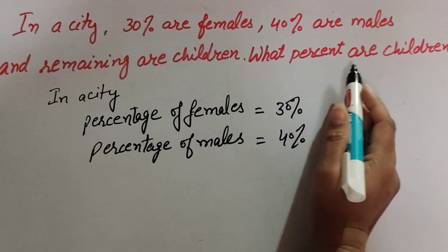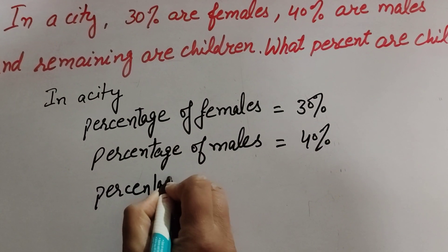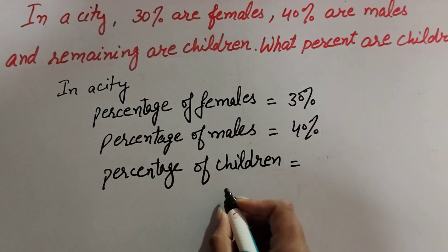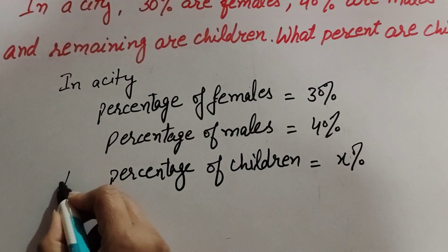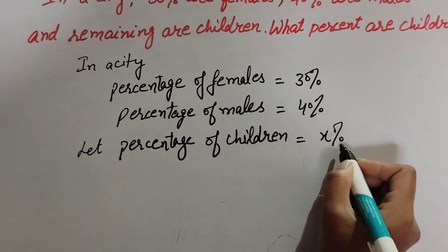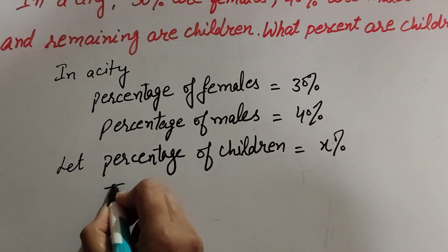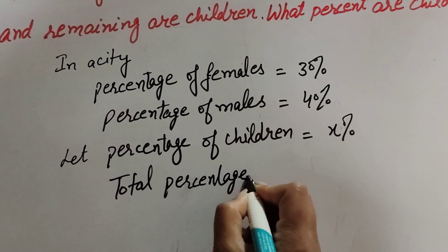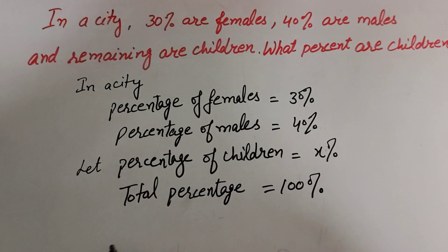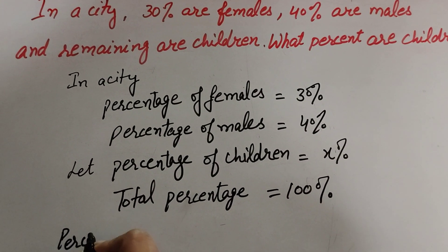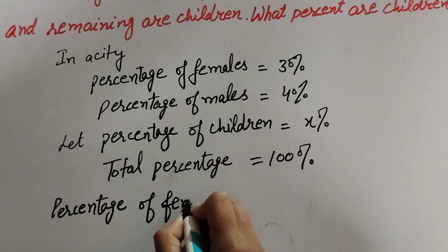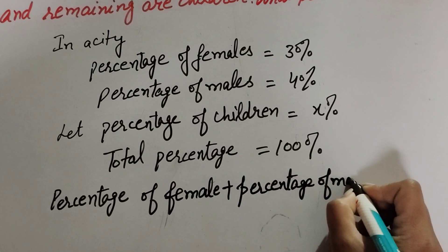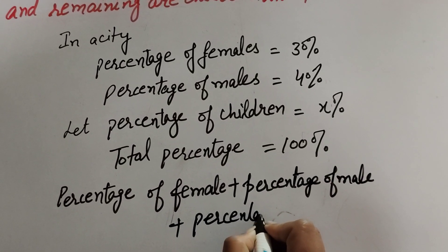We have to find the percentage of children. So we suppose it is equal to x percent. The total percentage is equal to 100 percent. Total percentage equals percentage of female plus percentage of male plus percentage of children.